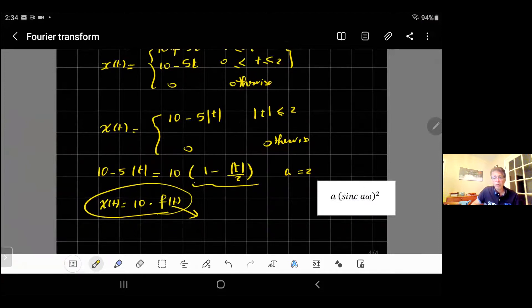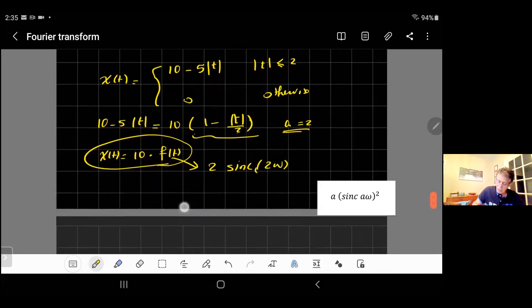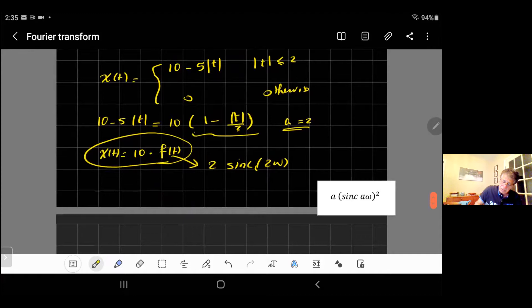Now this function has a Fourier transform equal to a sinc(aw). I'll tell you what this means, but let me just write out f(t), this one will be equal to a sinc(aw). And a is equal to 2 in my case here, that's what we found. So I will replace a by 2, and that will be 2 sinc(2ω).